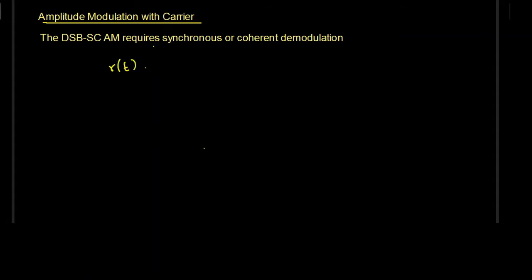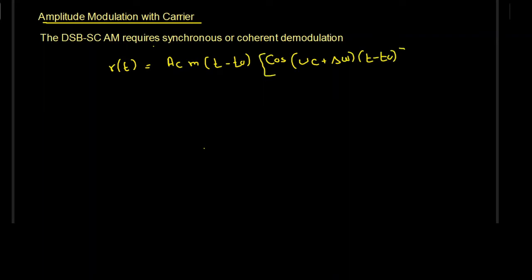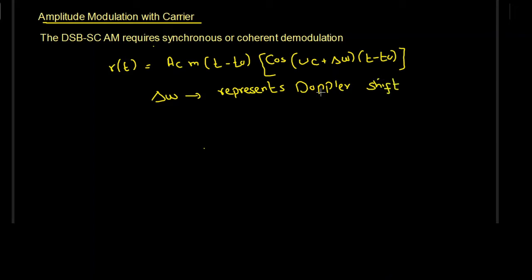As a result, on the receiver side we could have the received signal r(t) = Ac · m(t − t₀) · cos((ωc + Δω)(t − t₀)), where Δω represents the Doppler shift. In the case of double sideband suppressed carrier, the receiver needed to be sophisticated enough to estimate this Doppler shift.